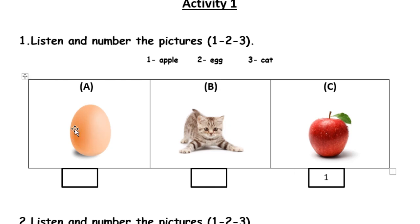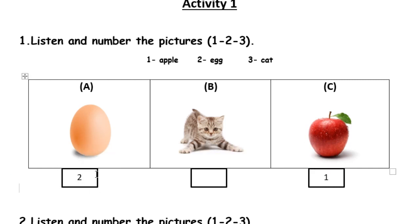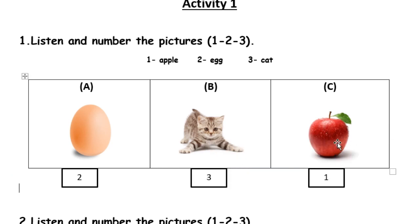Number 2 is Egg. So which one to choose, A or B? Wonderful, A! Excellent. So we need to write 2 here. Please make sure that it's clear and inside the box. We have one left — the last one. It's a Cat. So this is number 3. So: 1 is Apple, 2 is Egg, 3 is Cat.